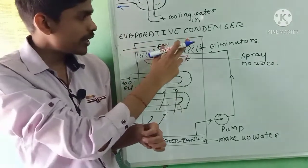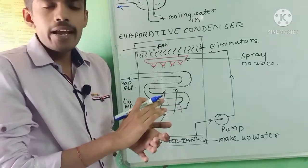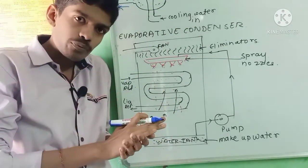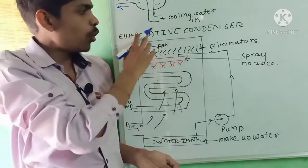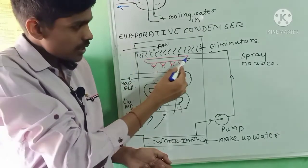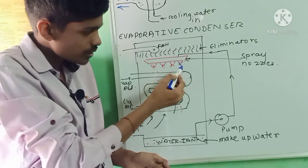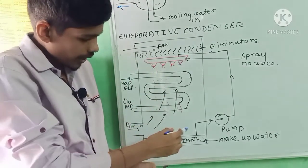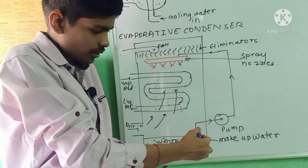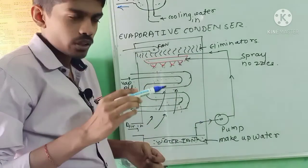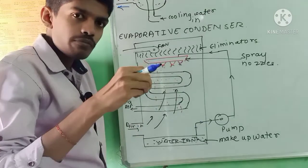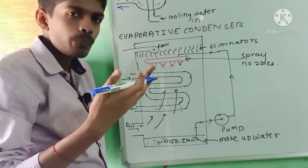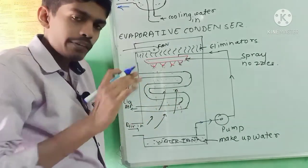Next is the evaporative condenser. In this type, both air and water can be used as the cooling medium. It includes a spray header with spray nozzles through which cooling water is sprayed, and drift eliminators. A fan is present, and vapor refrigerant enters from the top. A pump takes water from the sump and delivers it to the spray nozzles. The spray nozzles spray water over the refrigerant tubes, heat transfer takes place, and vapor refrigerant is converted into liquid refrigerant, which is sent to the receiver.